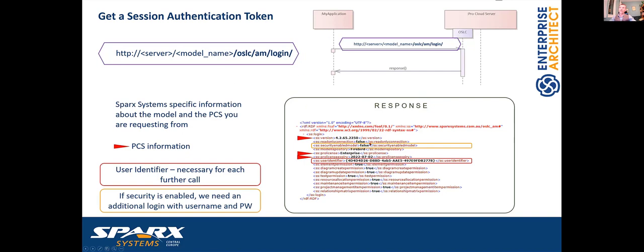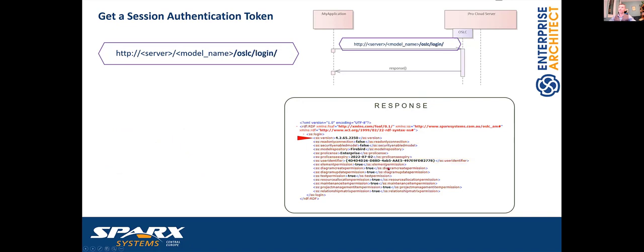Enterprise Architect has a feature called Enterprise Architect Security. If an EA repository has security enabled, we need an additional login with username and password. This indicates whether we need to ask the user for credentials in addition to the authentication token obtained from login. If security is enabled, we need an additional request for user credentials, and then we get the token and can work with it.